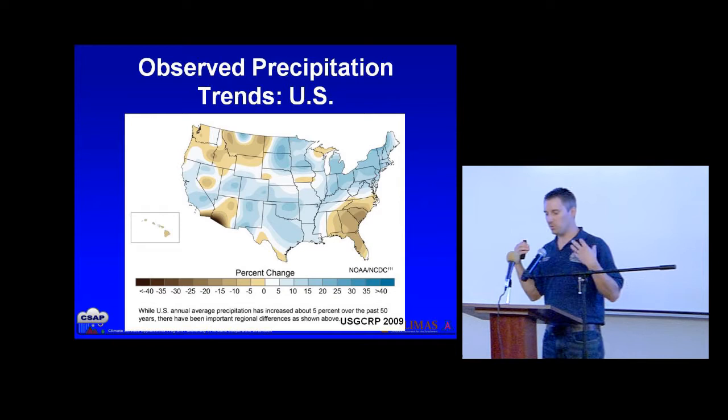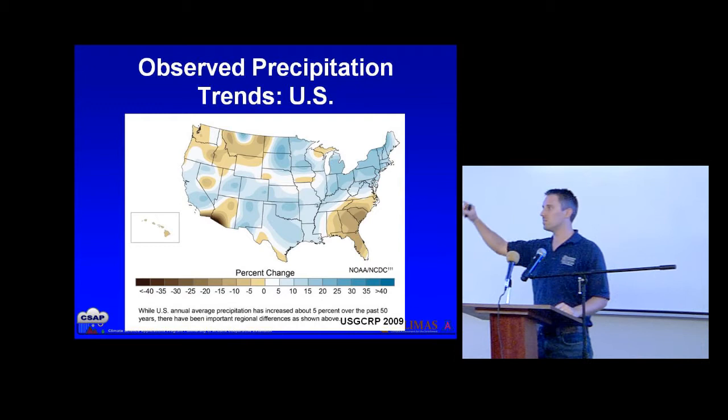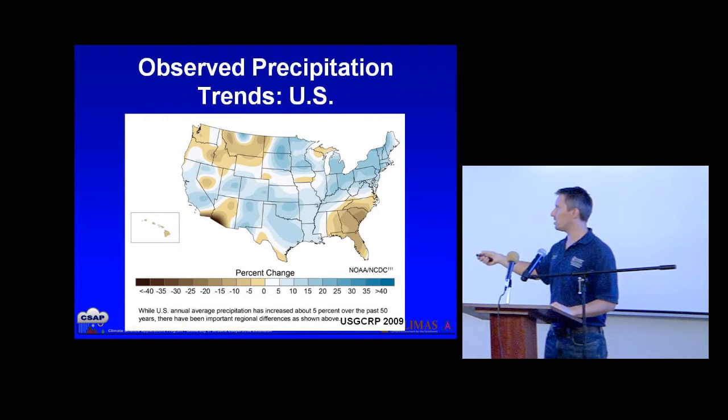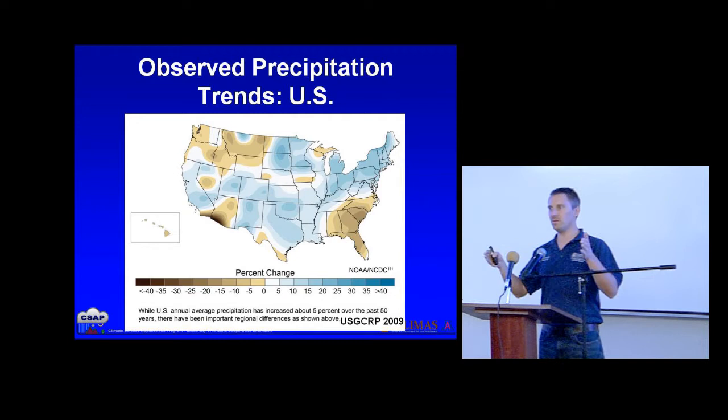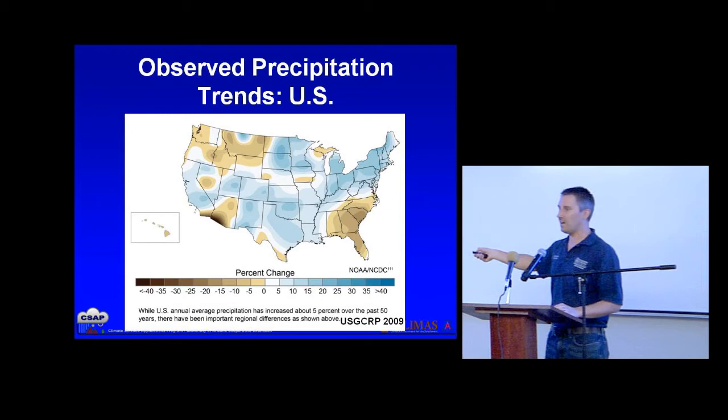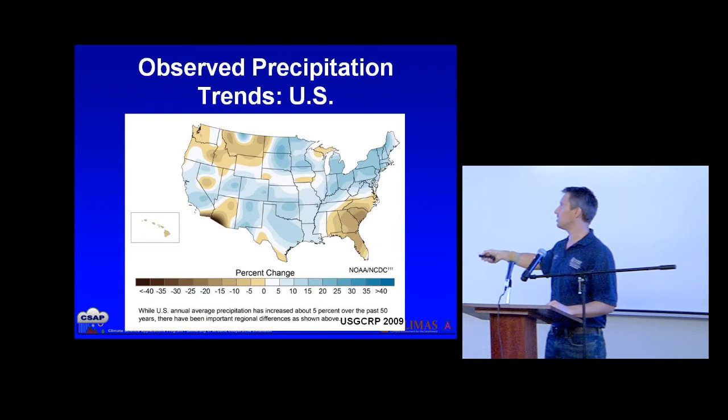Precipitation is not trendy — it doesn't have a long-term trend. It has variability that varies on decades, driven by El Niño and Southern Oscillations. So you see really strange patterns across the U.S., because there isn't really any place getting consistently dry or consistently wet over a long period of time. The southeast has gone from very wet to very dry and back and forth.